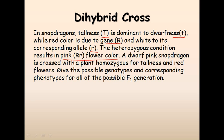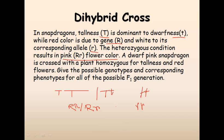A dwarf pink snapdragon is crossed with a white plant homozygous for tallness and red flowers. We need to give the possible genotypes of the offspring. For tallness, tall plants can be TT or Tt. For red color, red plants can be RR or Rr. A dwarf pink snapdragon has genotype tt Rr, since dwarf is tt and pink is heterozygous Rr.